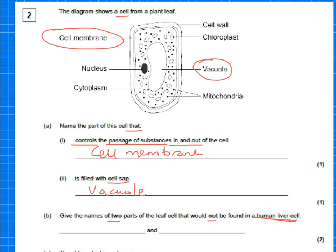So the two answers are going to be related to things that you would find in only a plant cell. In that case, it would be the cell wall and the chloroplast. You could also have for the answer, the vacuole as well, because that is only found in a plant cell and it wouldn't be found in a human liver cell.